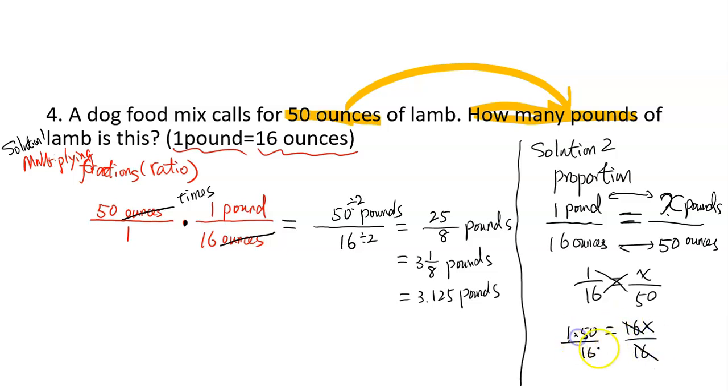So now we have 50 divided by 16. Again, you will get the same answer, which is 3 and 1/8. So both methods work.